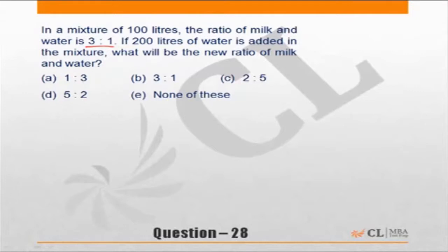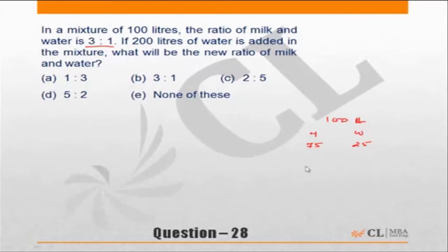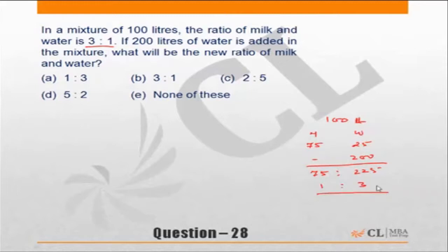This is a simple question. 100 liters of mixture — milk and water in the ratio 3 to 1 — so milk will be 75 liters and water will be 25 liters. 200 liters of water is added, so it becomes 75 liters milk and 225 liters water, and the ratio becomes 1 is to 3. Easy question.